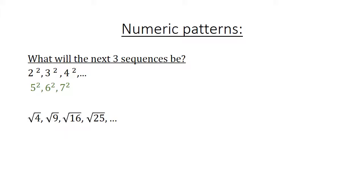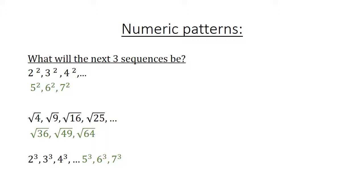Square root of 4, square root of 9, square root of 16, square root of 25 — the next 3 in the sequence will be square root of 36, square root of 49, and square root of 64. Then: 2 to the power of 3, 3 to the power of 3, and 4 to the power of 3 — the next 3 in the sequence will be 5 to the power of 3, 6 to the power of 3, and 7 to the power of 3.